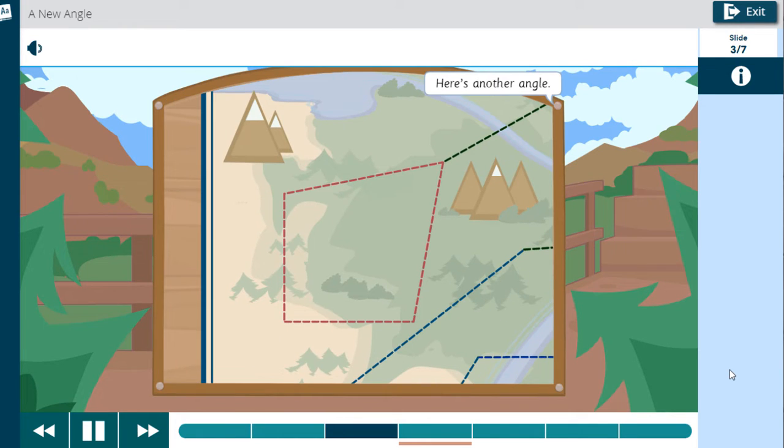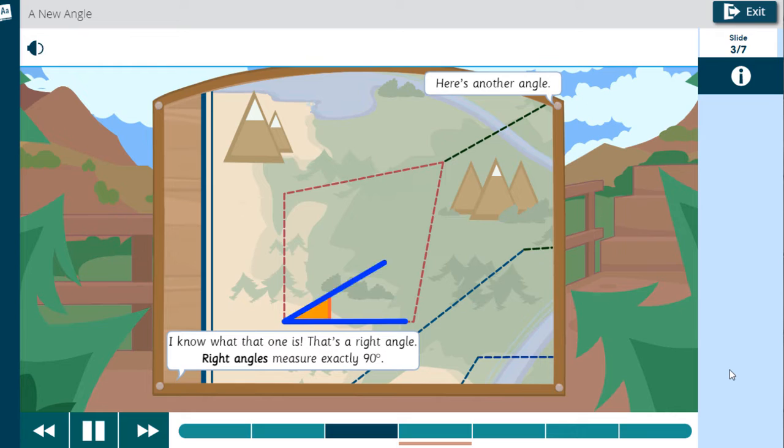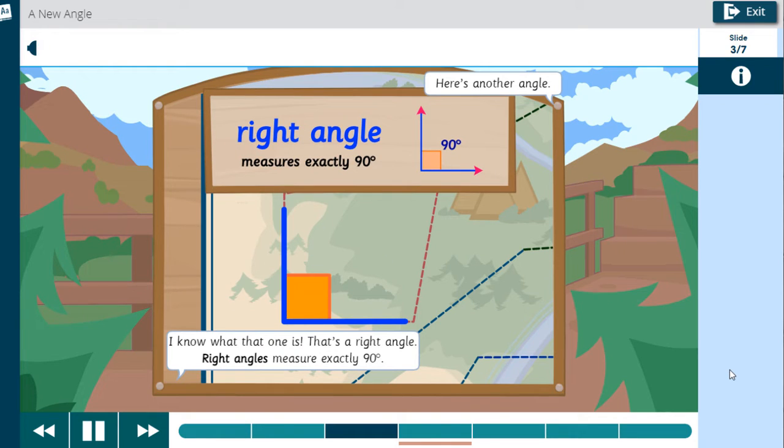Here's another angle. I know what that one is. That's a right angle. Right angles measure exactly 90 degrees.